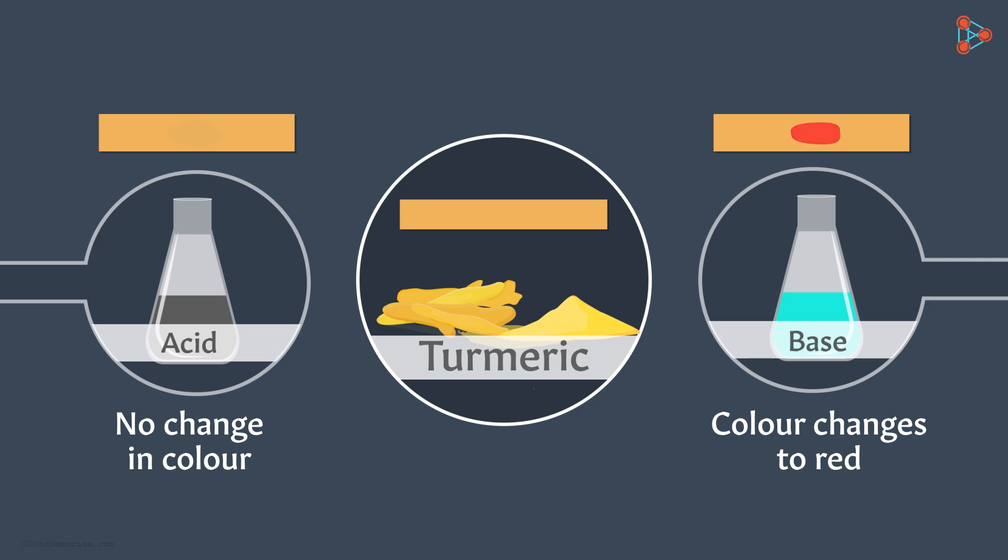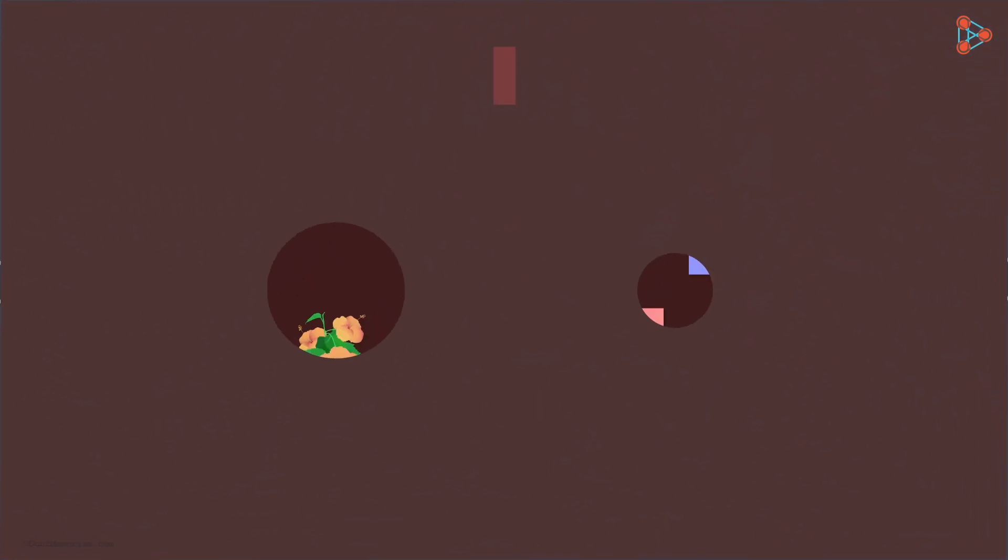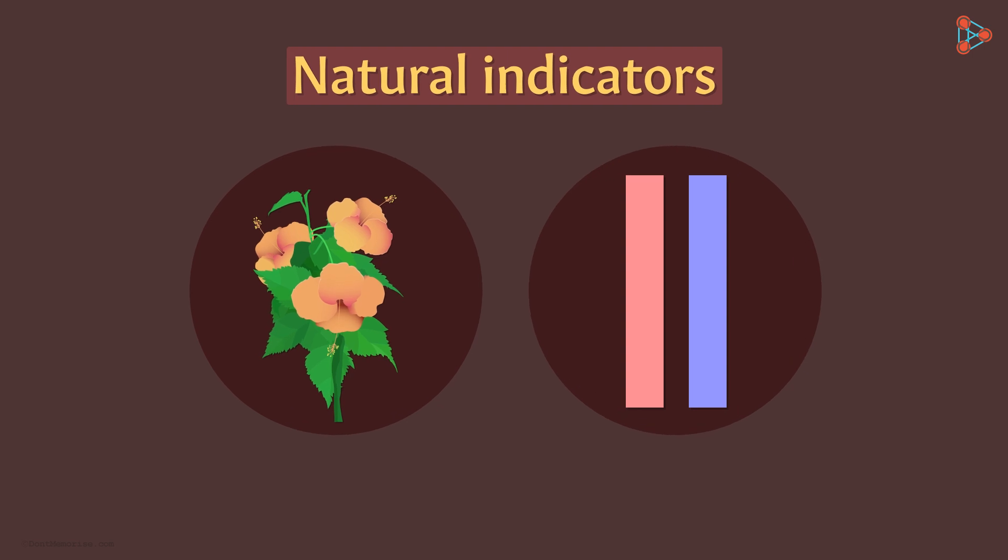And there are more natural substances that can be used as indicators. Yes, there are many in the list. Next, let's look at two more natural indicators which help in detecting the acidic and the alkaline nature of solutions.